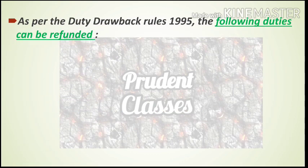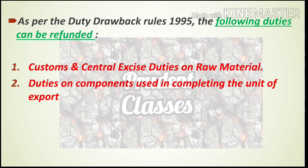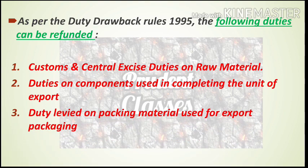As per the duty drawback rules 1995, the following duties can be refunded. The duty drawback rules of 1995 specify which particular duties are refunded. Custom duty is refunded, and also the duty levied on packaging used for export products is also refunded to you under the duty drawback scheme. Note this down — we have already discussed this point, and it is mentioned again here for more clarity.